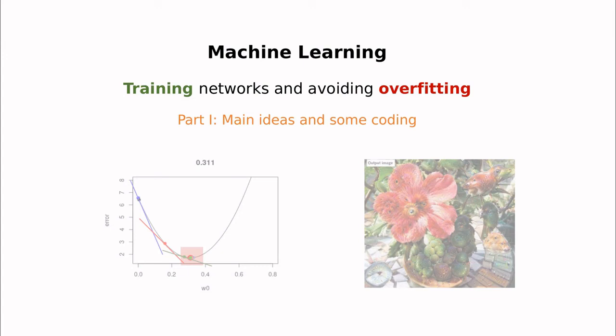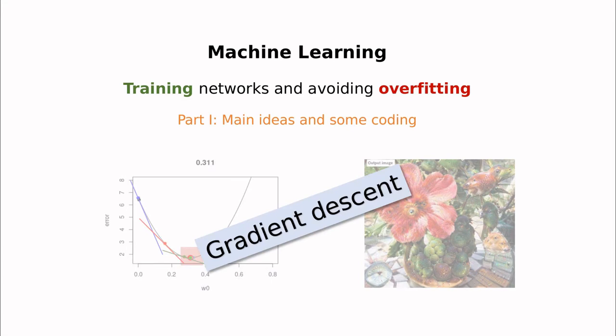Today we're going to talk about one of the most important parts in machine learning, which is related to how to train an algorithm. I'm going to talk about neural networks and overfitting neural networks, but I'm also going to discuss a method called gradient descent that you can use even in linear regression.